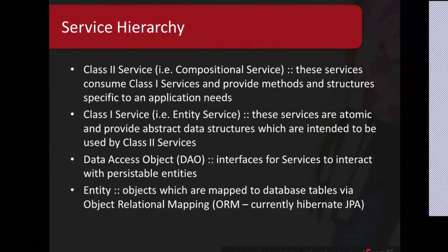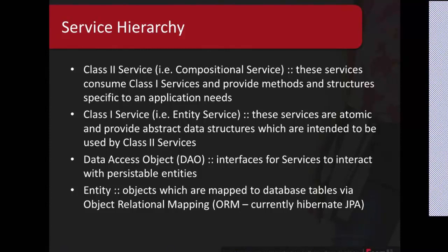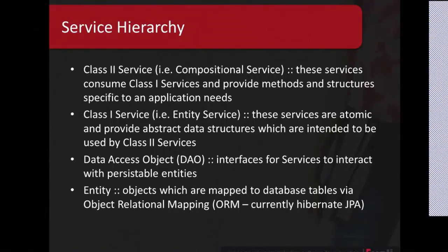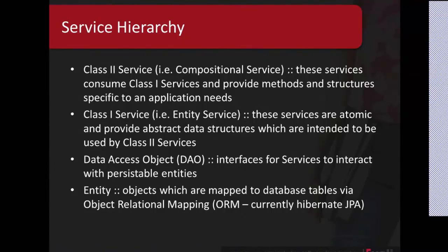You also have to update the entity structure and ultimately the database structure. Our Class 2 services are called compositional services. They're more along the lines of business application services. They provide direct integration to the application and separate the application from the entity layer. They give us the ability to provide adaptors for institutions — if an institution determines that a certain business service needs to be replaced, they could completely replace that business service implementation with their legacy systems, without changing the entity and database structure. That's the purpose of the Class 2 service.